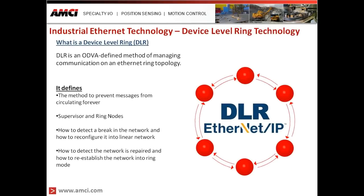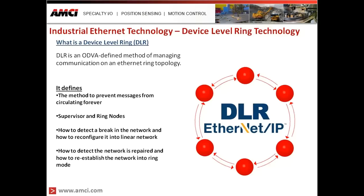This leads us to a more defined method for communicating on a ring-type network: device-level ring, or DLR. DLR is an ODVA-defined method for managing communication on an Ethernet ring topology — and being ODVA, that Ethernet protocol is EtherNet/IP. DLR defines the method to prevent messages from circulating forever, defines the supervisor and ring nodes, defines how to detect a break in the network and reconfigure it into a linear network, and defines how to detect when the network is repaired and reestablish it into ring mode.